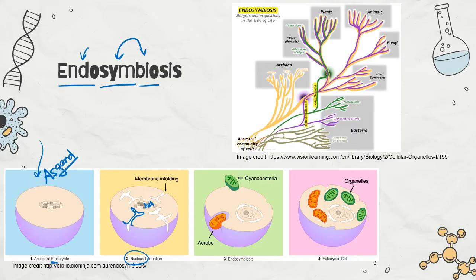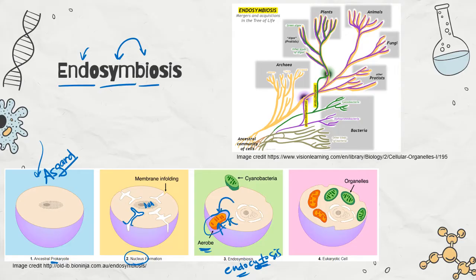Now we have a cell with a nucleus. Then what this cell did was endocytosis — the cell is pulling stuff inside it. The plasma membrane of Asgard folded in and engulfed a bacteria cell that was really good at making ATP — an aerobic bacterial cell. But instead of digesting this bacteria cell and breaking it down, the host cell started feeding it glucose and oxygen, and that aerobic cell started pumping ATP out for the cell. They had this symbiotic relationship, helping each other survive.